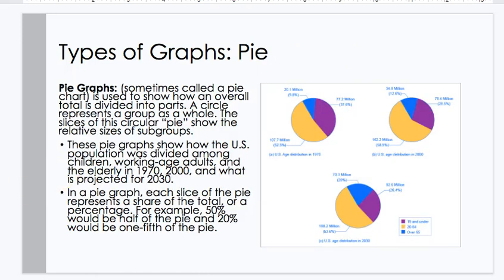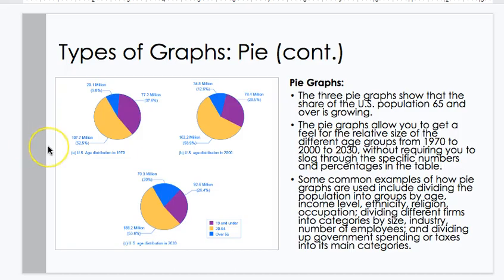There's also pie graphs, sometimes called a pie chart. They're used to show how an overall total is divided into parts. The circle represents a group as a whole. The slices of the circular pie show the relative sizes of subgroups. These pies show how the U.S. population was divided among children, working-age adults, and the elderly in 1970, 2000, and what is projected for 2030. In a pie graph, each slice of the pie represents a share of the total, or a percentage. For example, 50% would be half of the pie, 20% would be one-fifth, and so on.